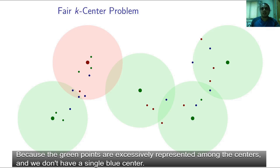Why? Because the green points are excessively represented among the centers and we don't have a single blue center.